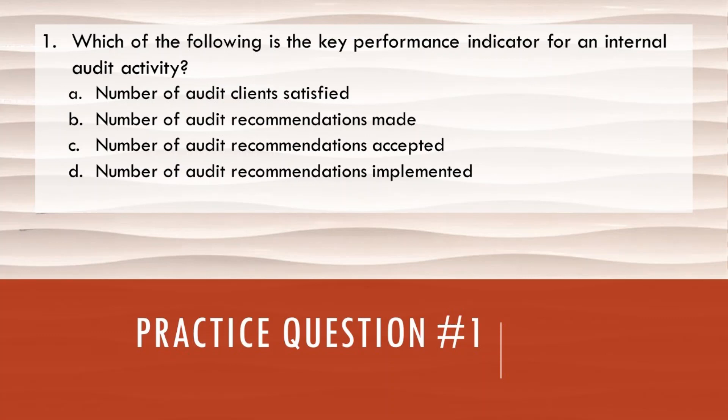We're looking for the KPI for an internal audit activity. B — number of audit recommendations made — is not correct because we can make numerous recommendations, but all of those recommendations may not provide value or add value to the internal audit client. Just because we propose several recommendations doesn't mean it's necessarily adding value to the risk management, governance, and control system within the organization.